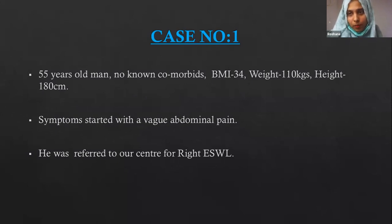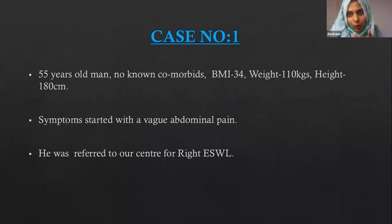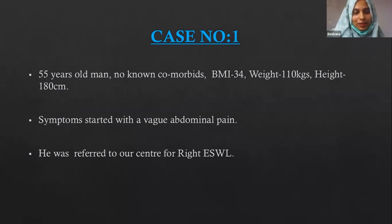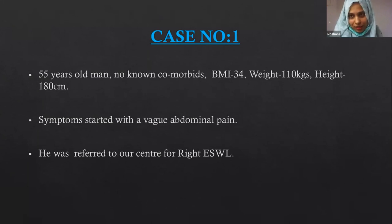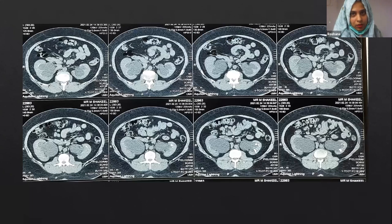The first case is a 55-year-old gentleman with no comorbidities, BMI of 34, weight around 110 kg (previously 120 kg, he has lost 10 kg). He is six feet tall. His symptoms started with vague abdominal pain. He was worked up thoroughly with ultrasound and scans, underwent some procedures, and was referred to our center for lithotripsy on the right side.